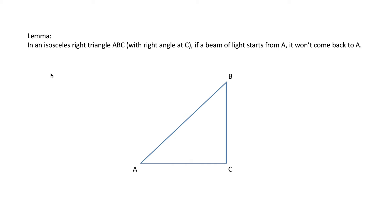The second thing we need is this lemma: in an isosceles triangle ABC with the right angle at C, if a beam of light starts from A, it won't come back to A. So if you keep a point source of light at A and the edges of the triangle are mirrors, the light won't come back to A after reflecting. If it hits either of the corners B or C, it will be absorbed.